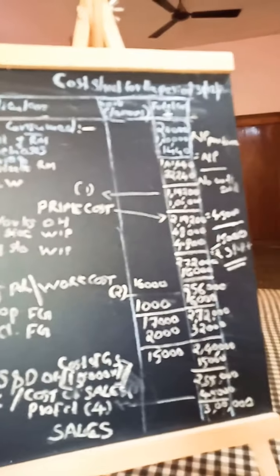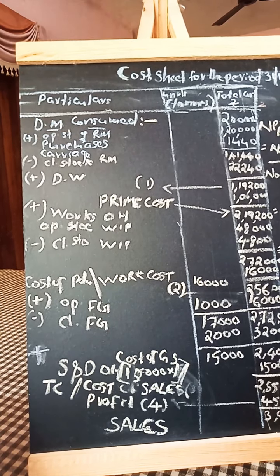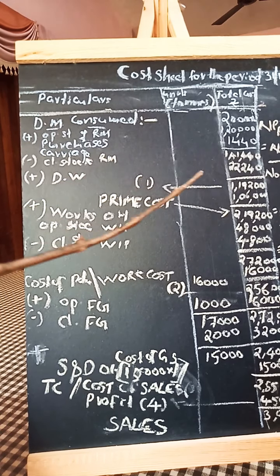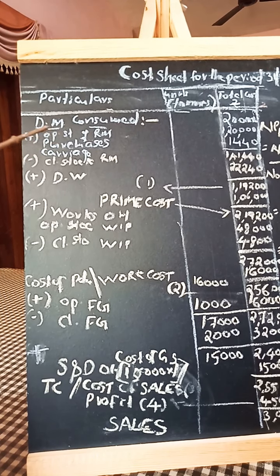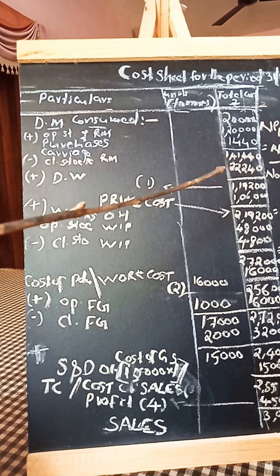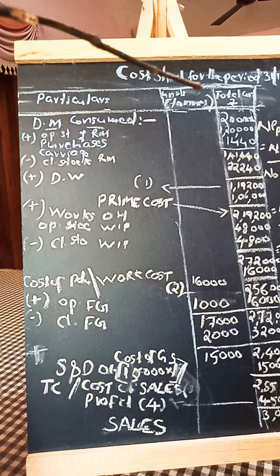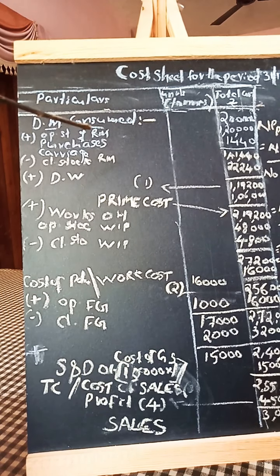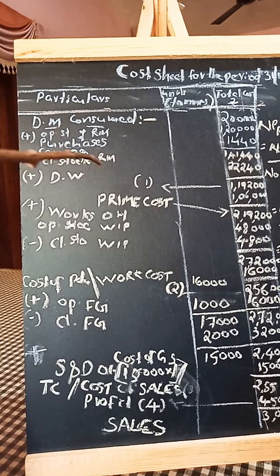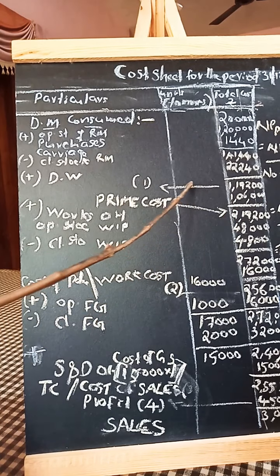Cost sheet for the period ended 31st December 2019. Value of direct material consumed equals opening stock of raw material Rs. 20,000, plus purchases Rs. 1,20,000, plus carriage on purchases Rs. 1,440, giving a total of Rs. 1,41,440. From this, deduct closing stock of raw material Rs. 22,240. Then we get Rs. 1,19,200 as the value of direct material consumed. This is the answer to the first required calculation.